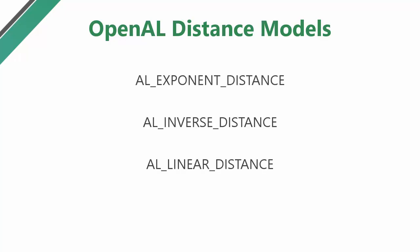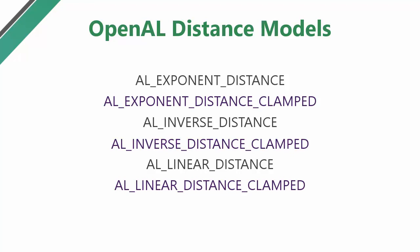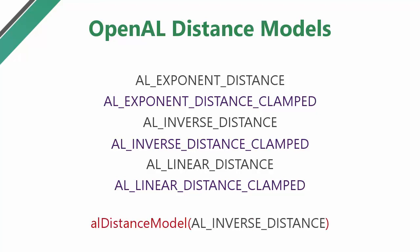OpenAL provides three different attenuation models, each of which has a different way of attenuating the gain of a sound source over distance. Each of these models also has a clamped version. To choose which attenuation model you want to use, you just need to call the ALDistanceModel method and put in the name of the distance model that you want to use. You can only choose one distance model though, and that model will be used for all of your sources.